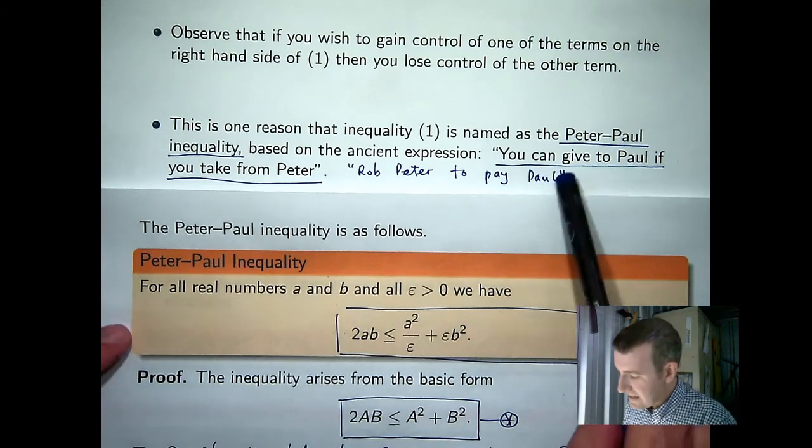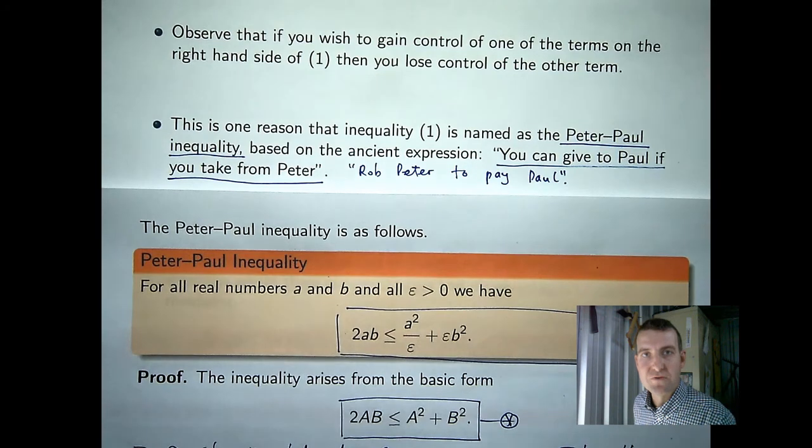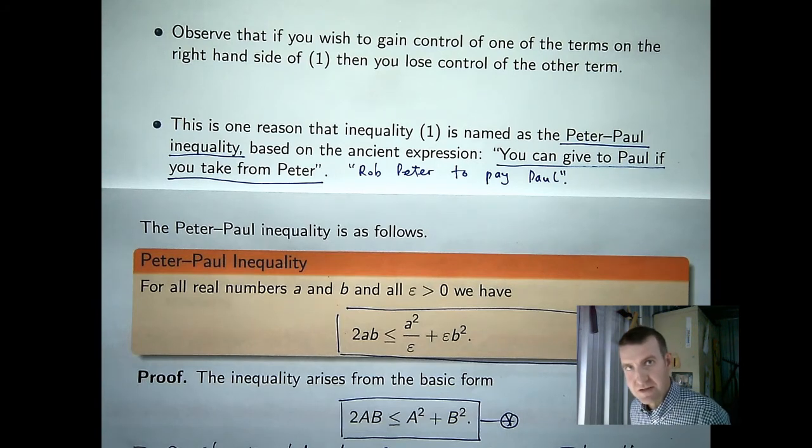A modern interpretation of this is, suppose you have two bills to pay and you only have enough money to pay one bill. Well, you have to decide which company or which bill you're going to pay and which company or bill you're not going to pay. So, in other words, in order to pay one company, you're not paying the other. You're sort of robbing from one company to give to the other.